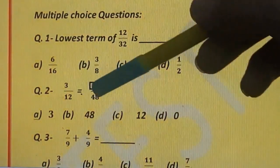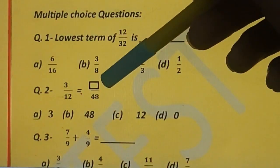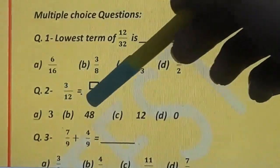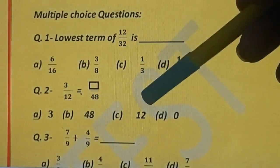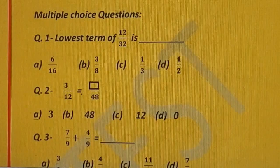Question number 2. 3 upon 12 is equal to dash upon 48. You have to fill this box with the correct number so that it will become an equivalent fraction. Options are: A) 3, B) 48, C) 12, and D) 0.